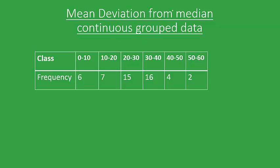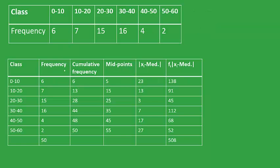To calculate the mean deviation from median of continuous grouped data, we'll first revise the method to calculate the median from continuous grouped data. We'll see it through an example. So let this be the data. To calculate the median, we'll construct a table in which we write class interval, frequency, and then the cumulative frequency.